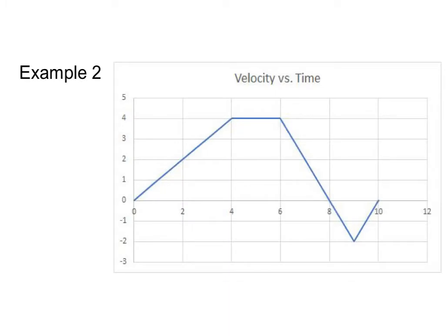Let's jump right into things. Here is my second velocity versus time graph. I'm going to do two-second chunks: two seconds, four seconds, six seconds, eight seconds, and ten seconds. I'm also going to draw a dotted line at nine seconds because it's easier to find the area of a right triangle than any other kind of triangle. Let's start finding positions at two, four, six, eight, and ten seconds.